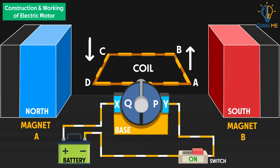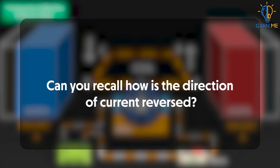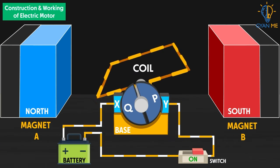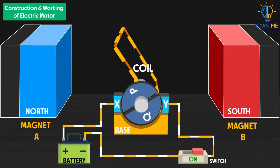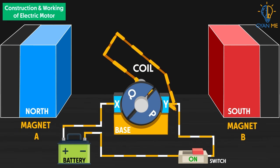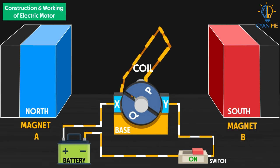Thus when the flow of current is reversed, the direction of force is also reversed. Can you recall how the direction of current is reversed? Yes, you are right, with the help of split rings. This process is repeated and the coil keeps on rotating continuously. This rotation of coil keeps the fan blades rotating when the fan is switched on.